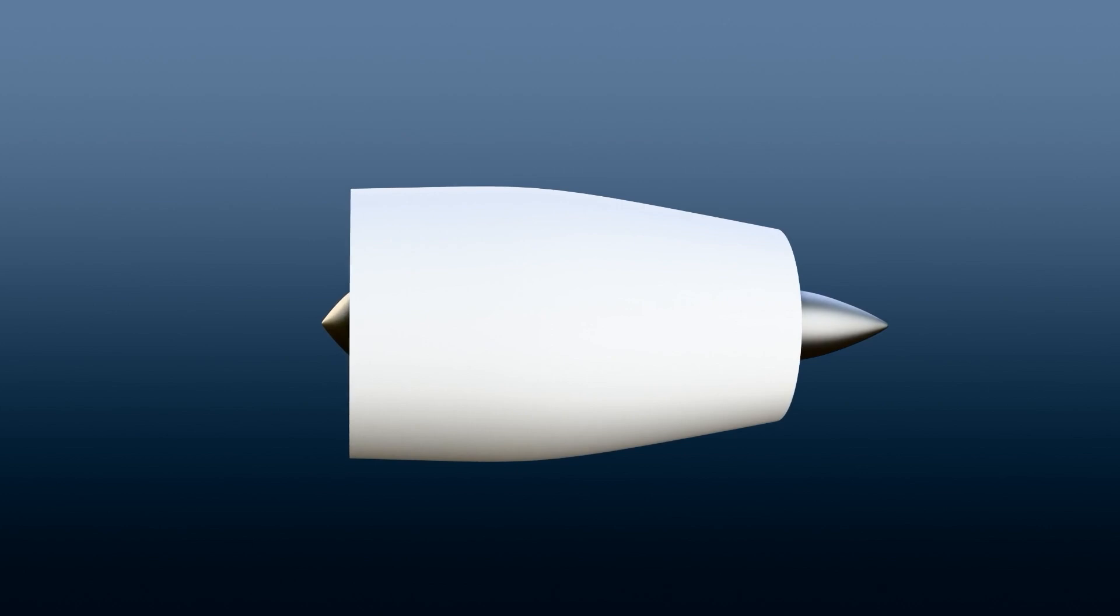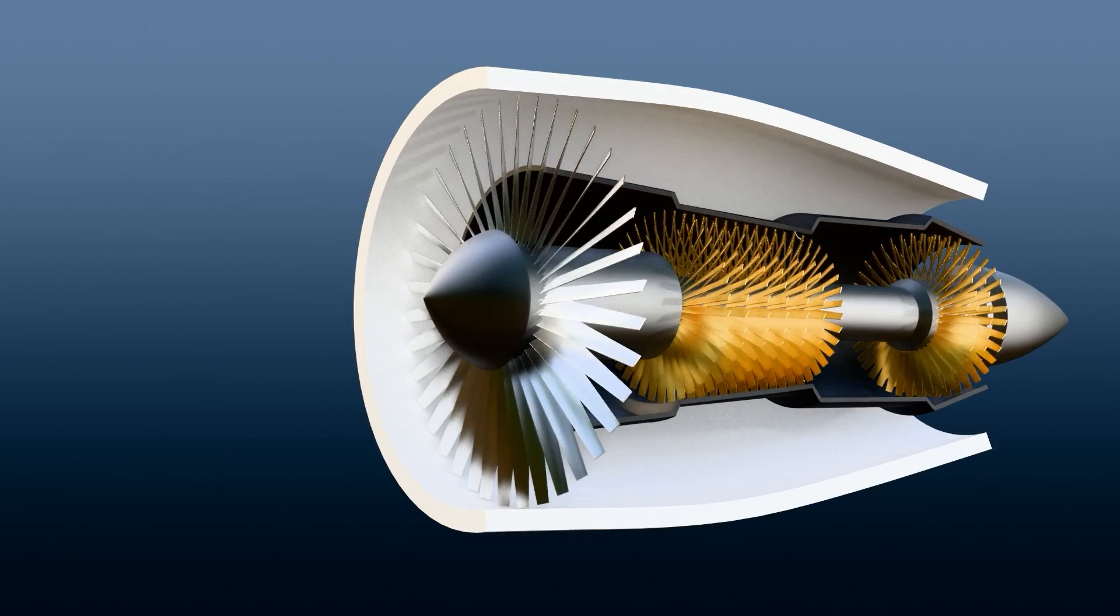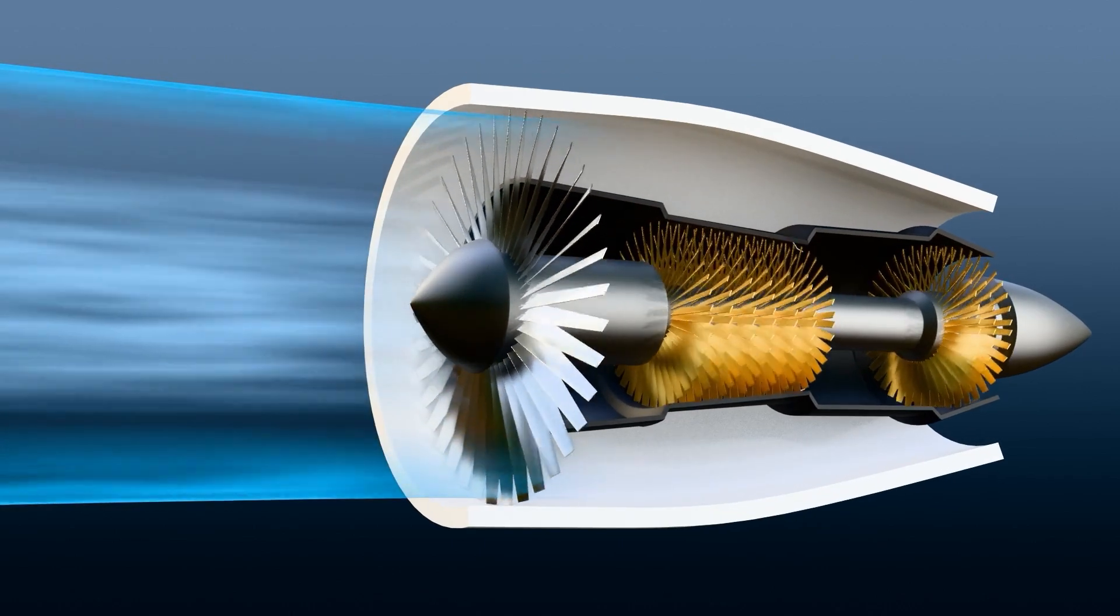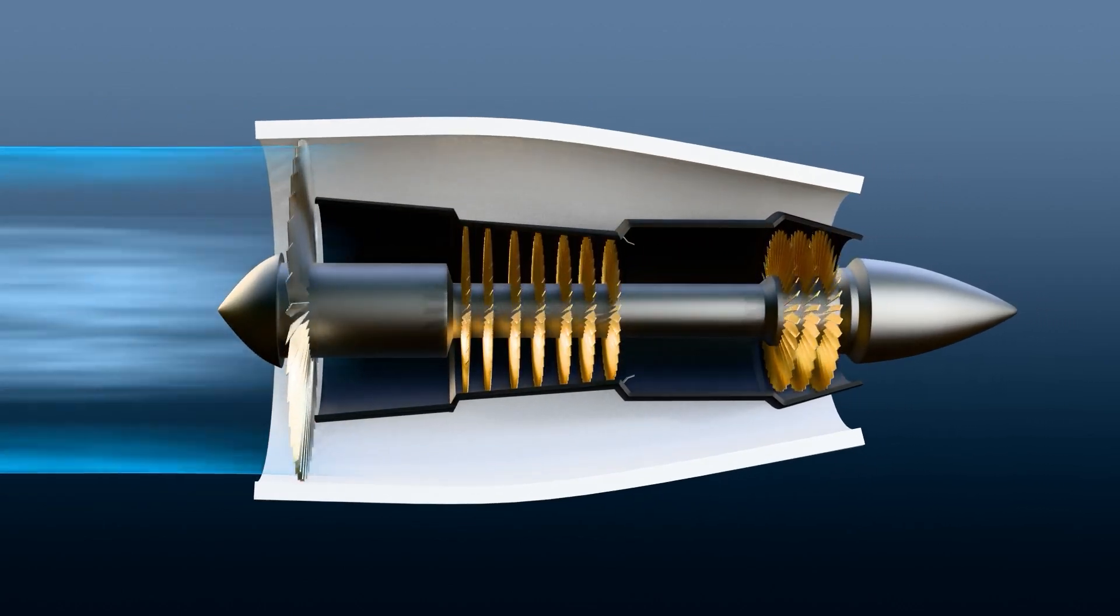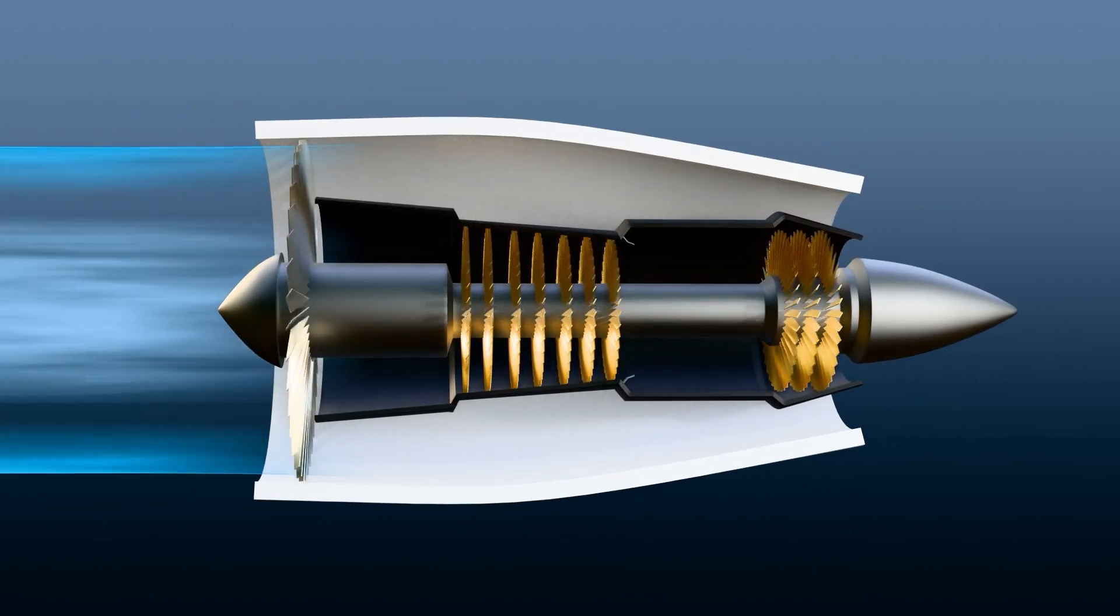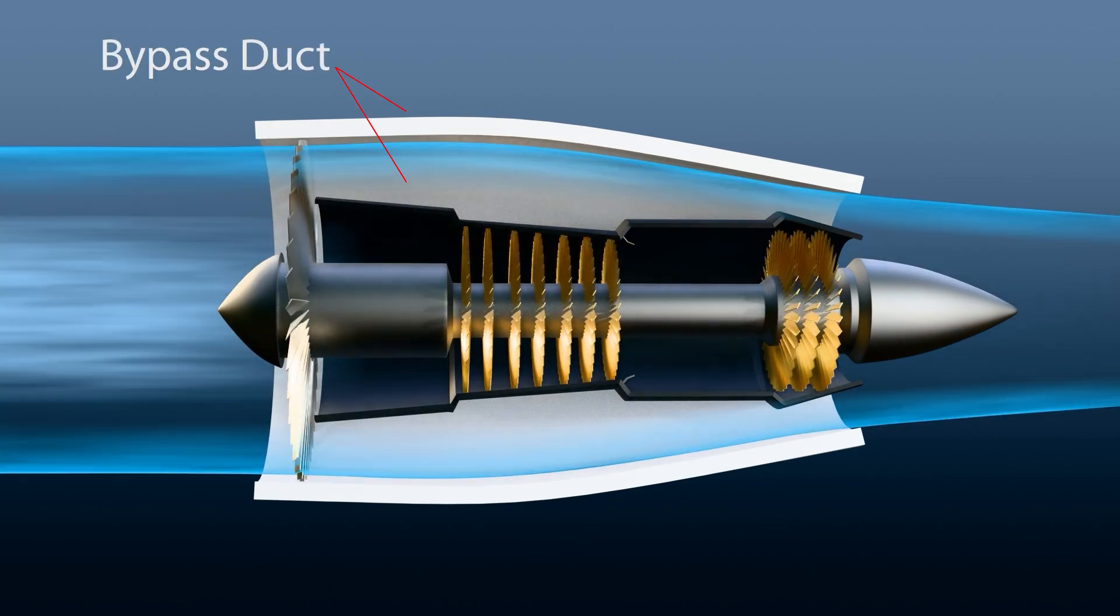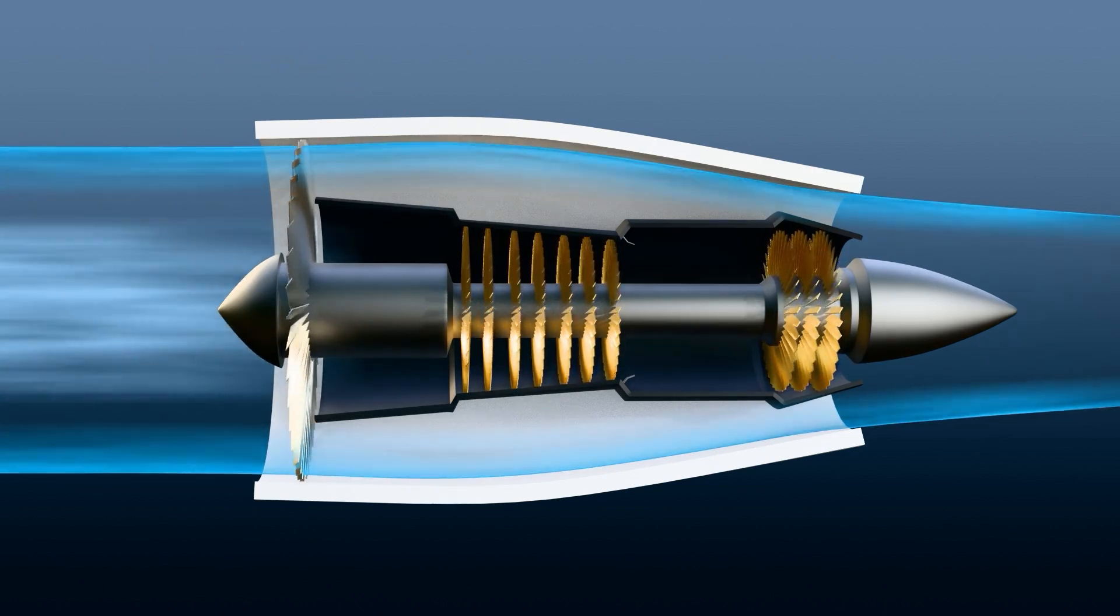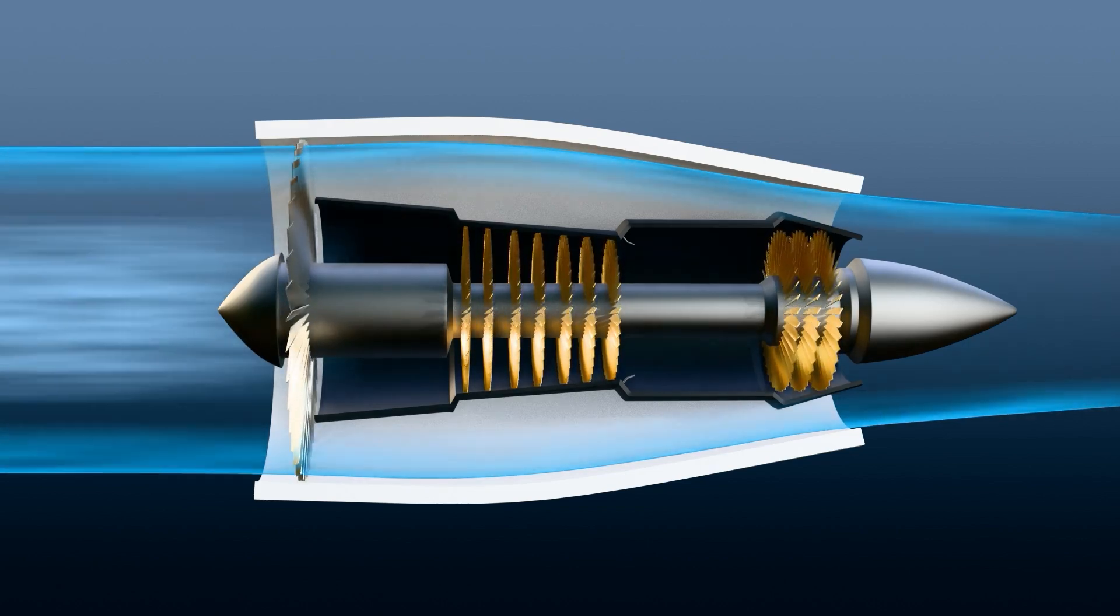A turbofan engine has a large ducted fan in front. As the fan blades rotate, they draw in ambient air and accelerate its flow. The high-speed air then enters the engine and splits into two streams. The first stream, called bypass air, flows around the core engine through the bypass duct and exits at the back of the engine. The bypass air produces up to 80% of the thrust and also helps cool the core engine.